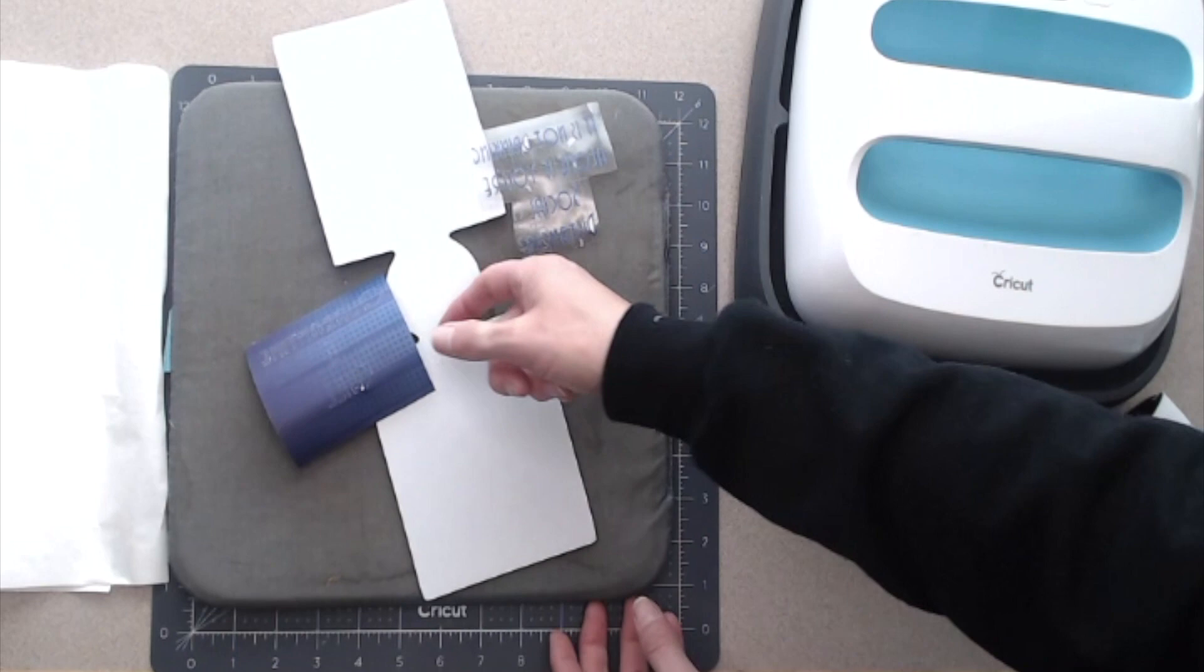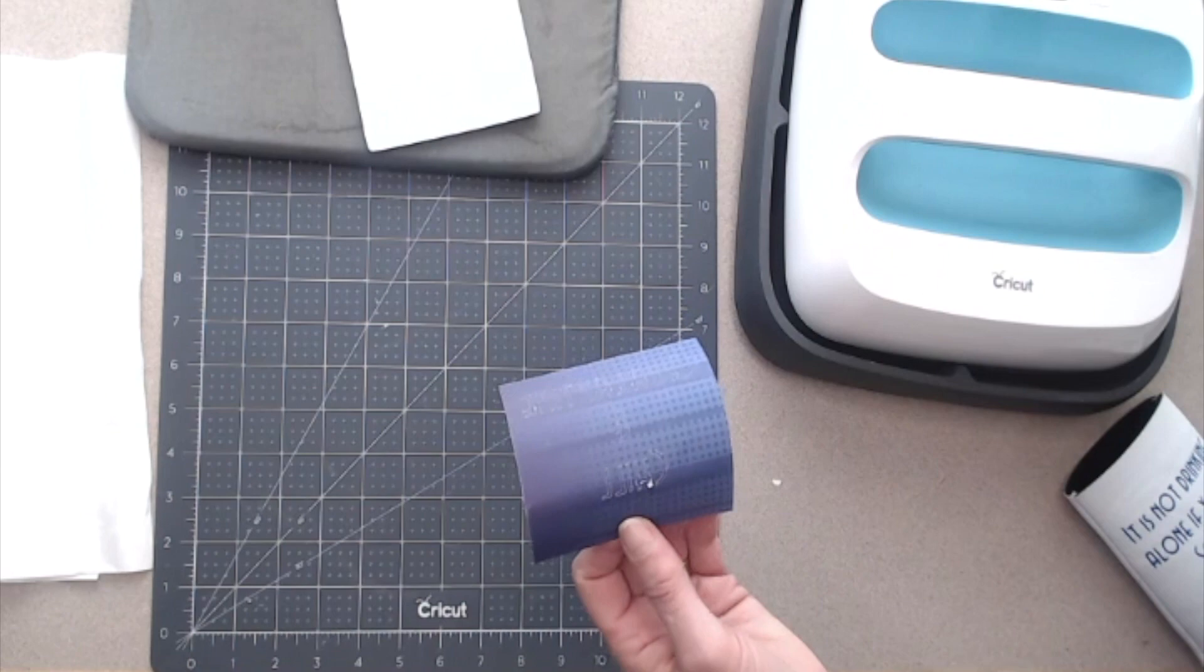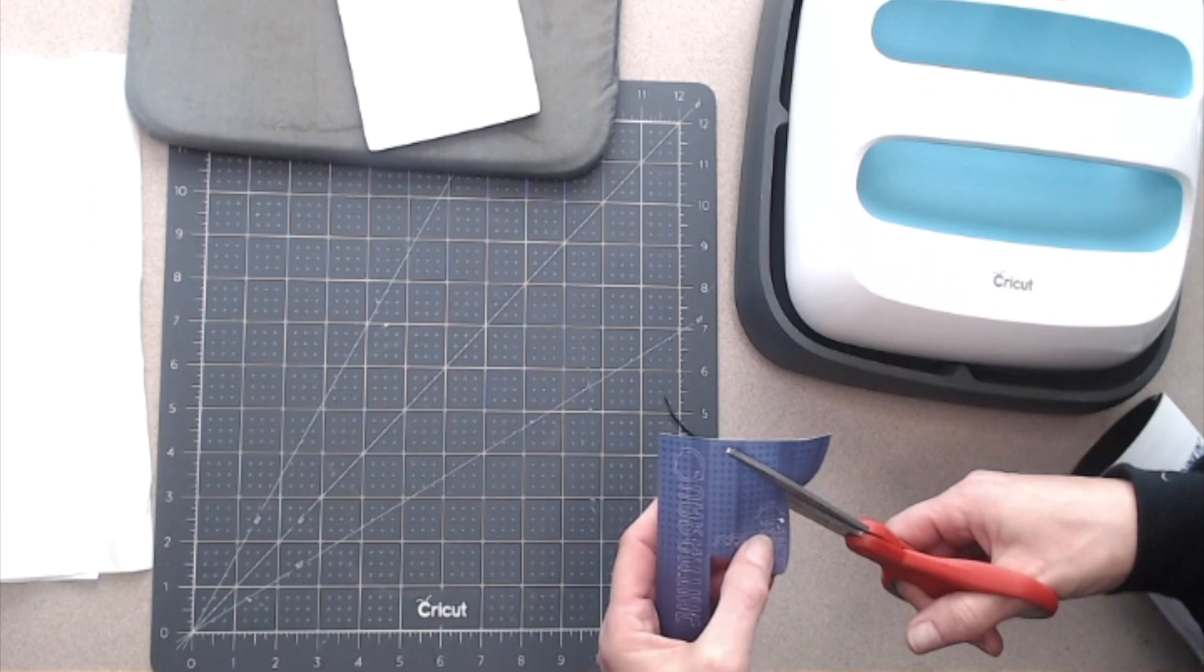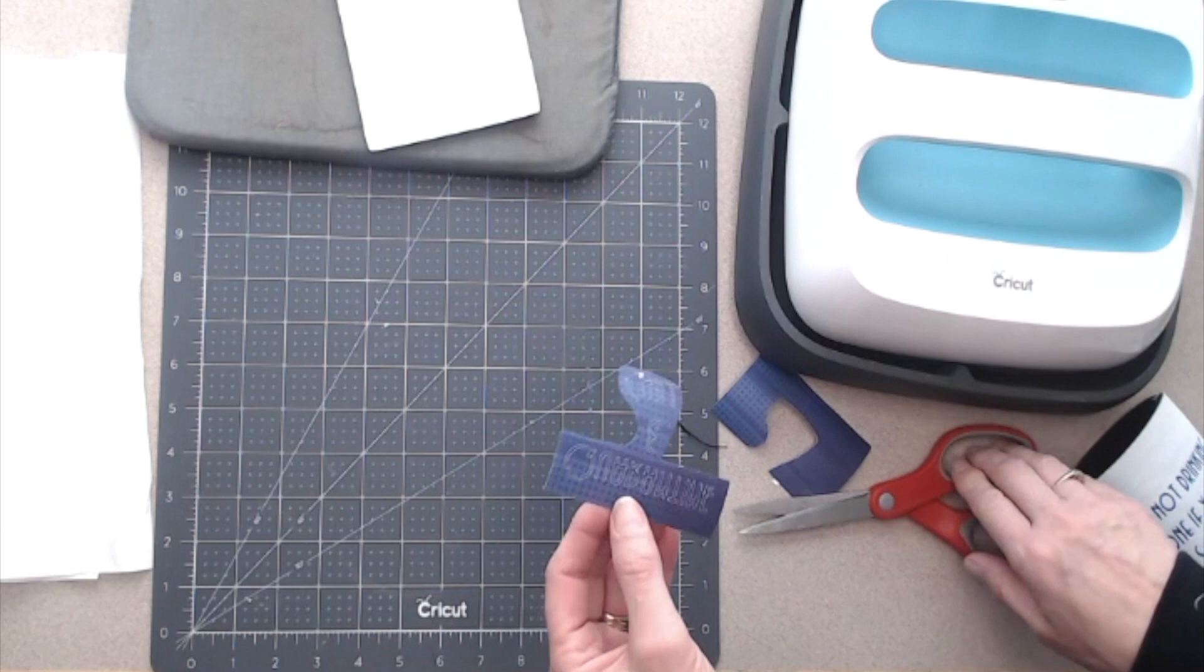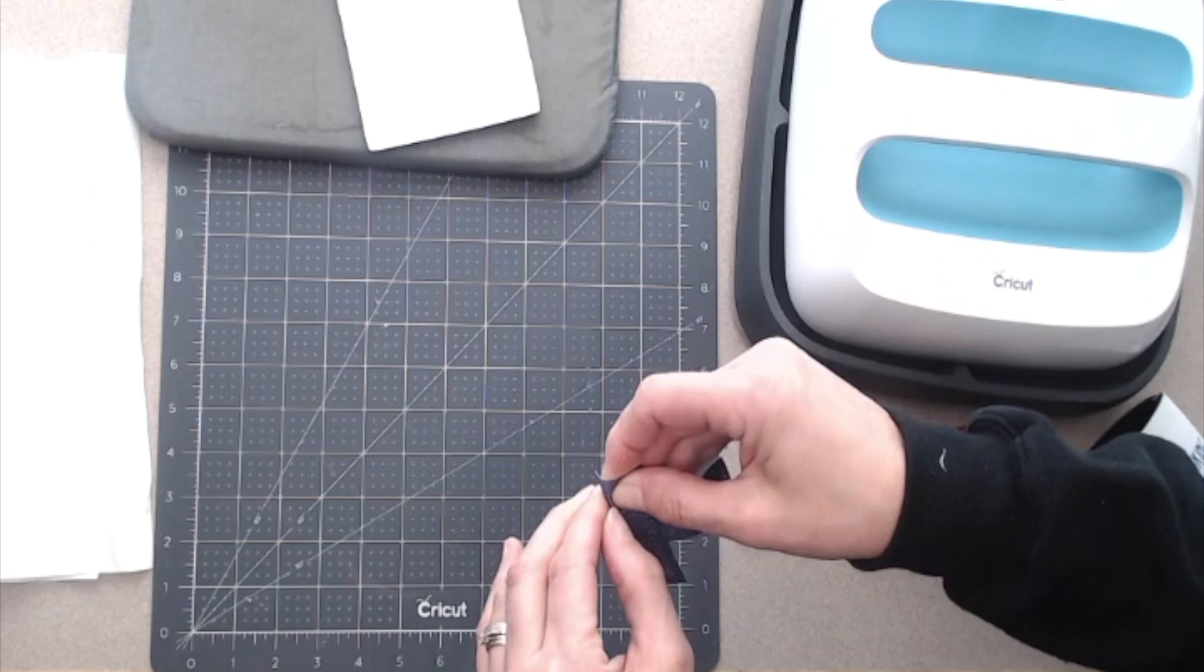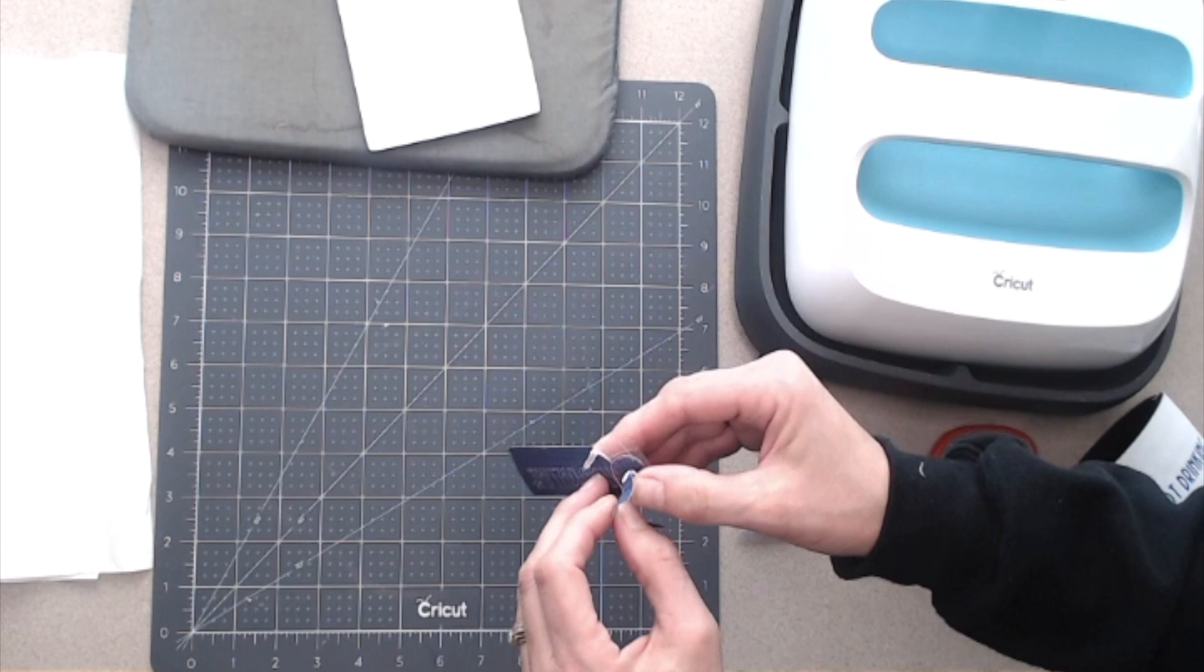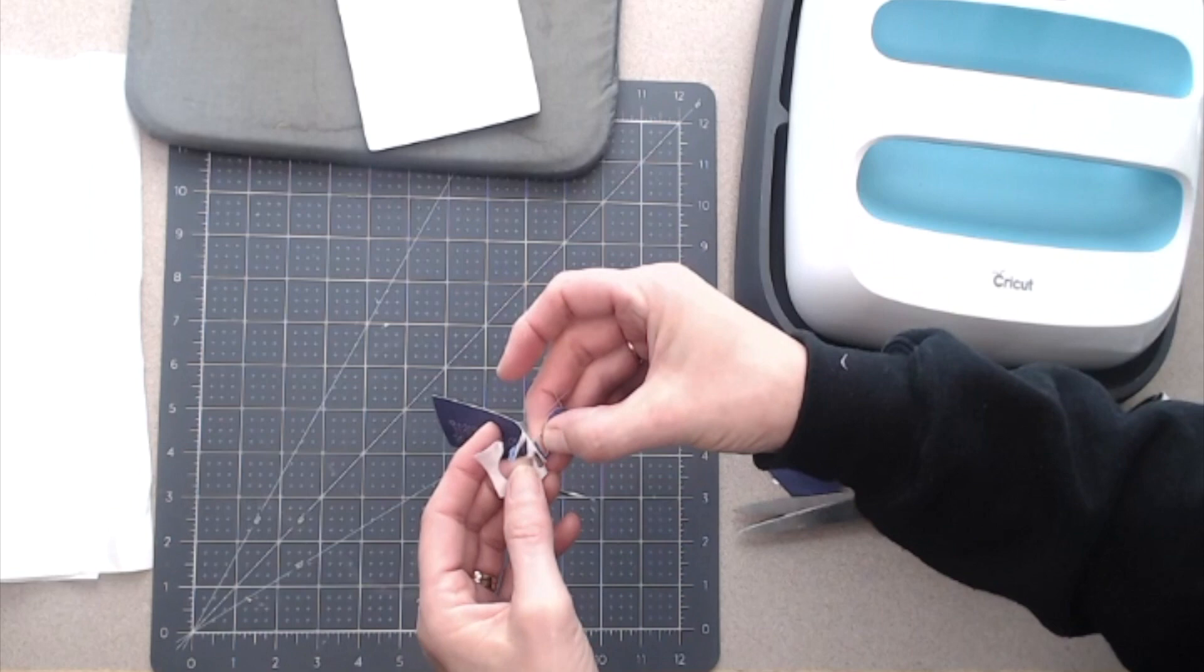Now as a reminder, whenever you're dealing with infusible ink, I always like to trim mine as close as I can, and then I call it the crack method. Sounds kind of funny, but remember with infusible ink you crack it away. I always find where I can get a start of a letter or the image, and then just take this very carefully. It weeds really nice, but just make sure that your letters are staying on and just work it.